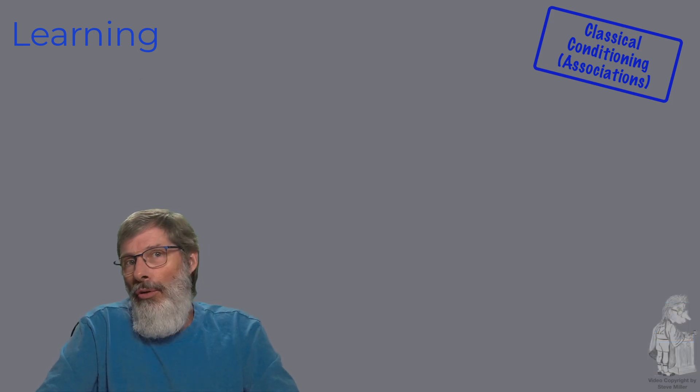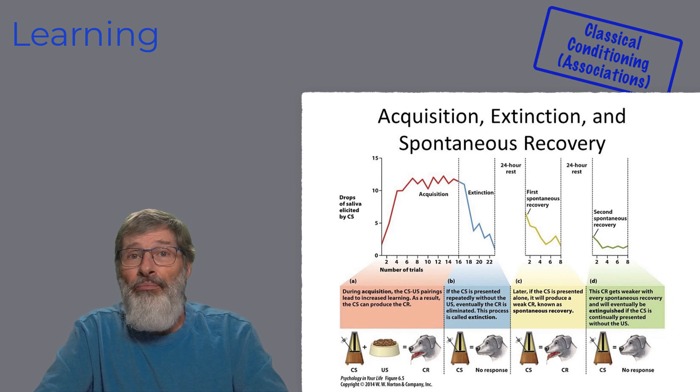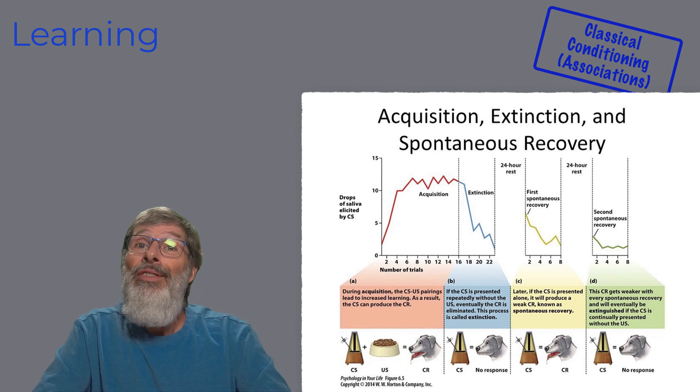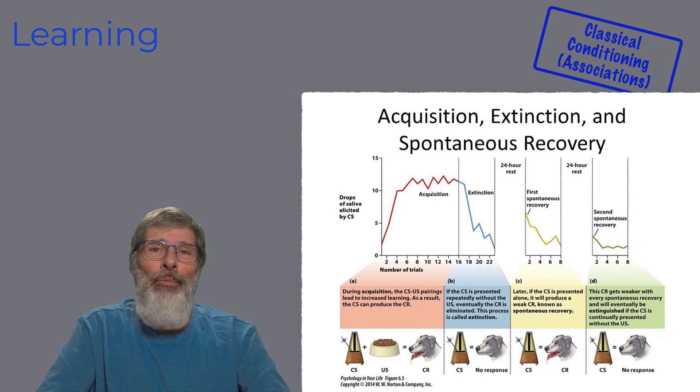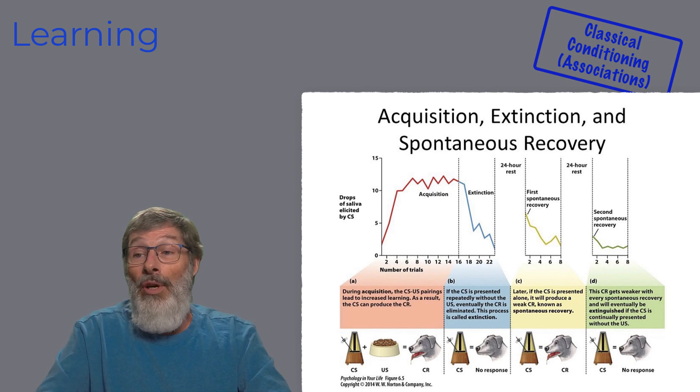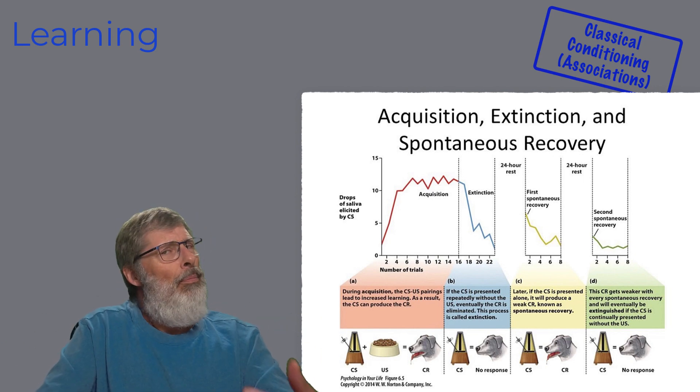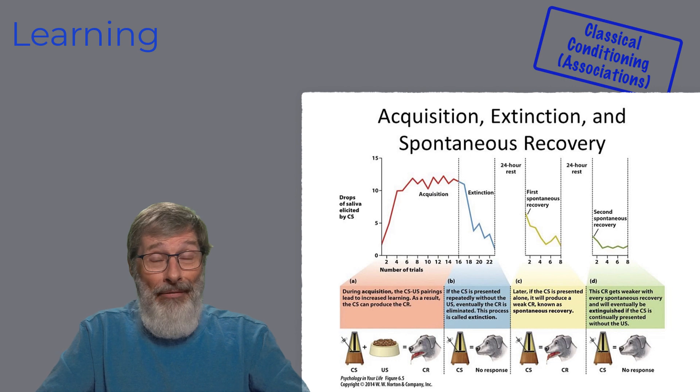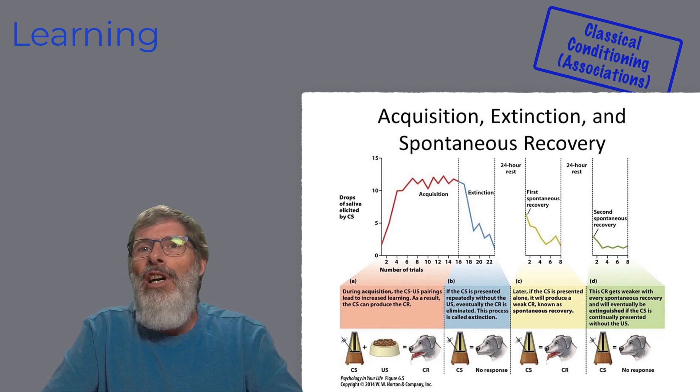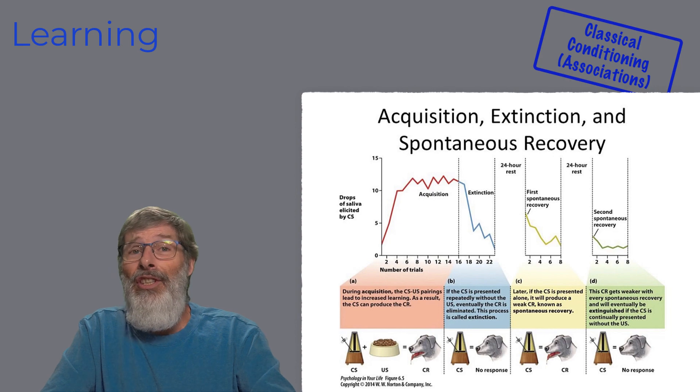There's two other terms that we could use here under classical conditioning, and that would be extinction and spontaneous recovery. Extinction is the process by which a conditioned stimuli loses the ability to elicit the conditioned response, because the conditioned stimuli is no longer paired with the unconditioned stimuli. Some things that are learned can be lost, if that connection is lost, if that association is lost. Spontaneous recovery is a recovery of a conditioned response after it's been extinct. A function of the passage of time, a response is still there, it's just waiting for the right time. Spontaneous recovery, like extinction, is adaptive.